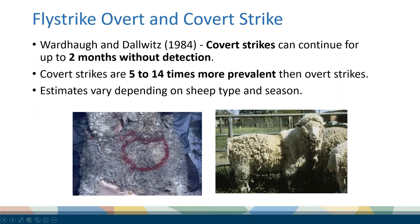I like to point out that there's fly strike you see and fly strike you don't see — we call the fly strike you don't see 'covert strike'. There was a great study done back in 1984 by Wardhaugh and Dallwitz, and they found that strike can continue for up to two months without being detected. Depending on the sheep type and the season, covert strike may be five to 14 times more prevalent than the overt strike that you can actually pick up and see.